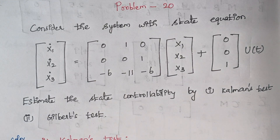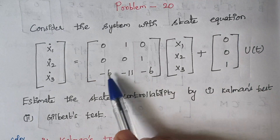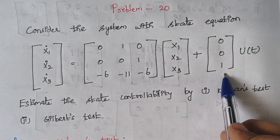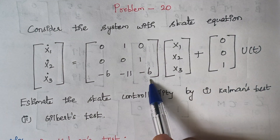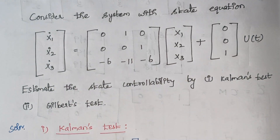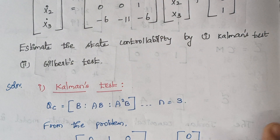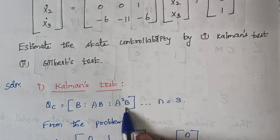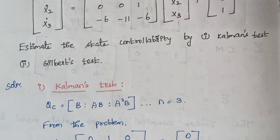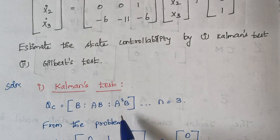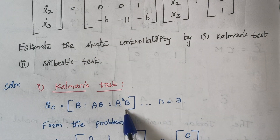First we proceed with Kalman's test. We identify the A matrix and the B matrix. The rank of the A matrix is 3. In Kalman's test, the first step is to find the matrix QC, which is nothing but [B, AB, A²B].